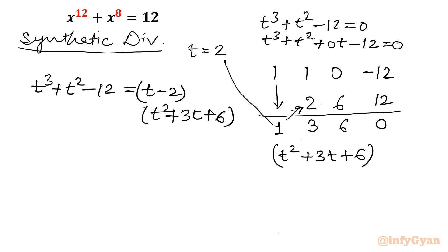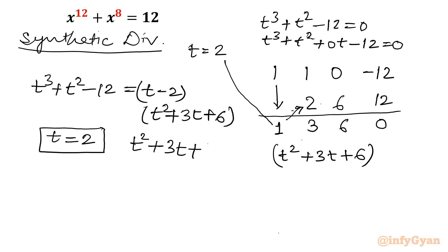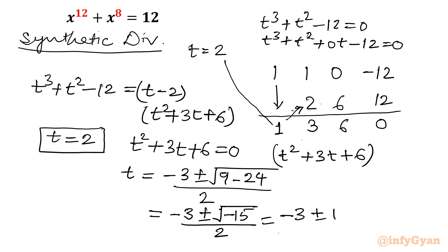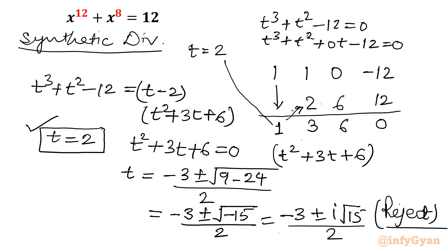Solutions come from both factors. From the first, t = 2. Now check for real solutions from the second equation: t^2 + 3t + 6 = 0. Using the quadratic formula, t = (-3 ± √(9 - 24)) / 2 = (-3 ± √(-15)) / 2, which gives complex solutions: (-3 ± i√15) / 2. We reject these since we are finding real solutions only. So what is left is t = 2.